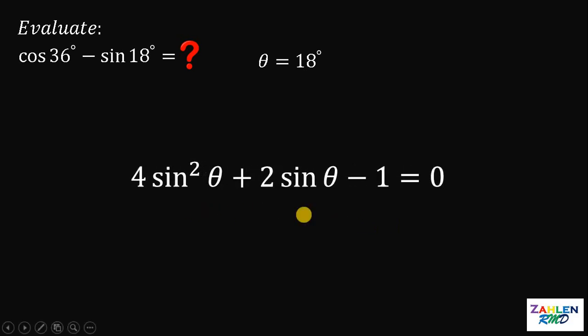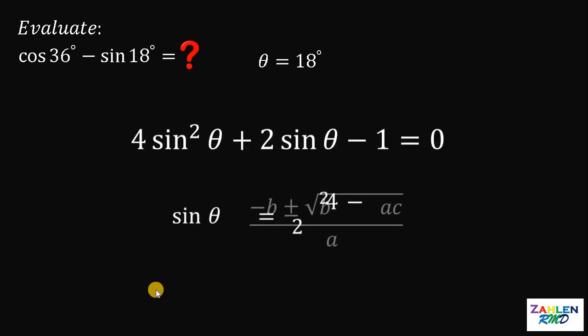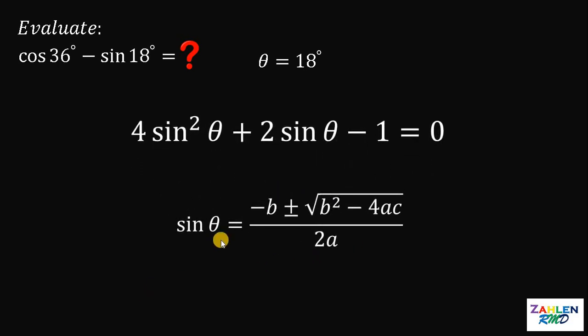Using the Pythagorean identity, cosine squared A equals 1 minus sine squared A. So cosine squared theta is replaced by 1 minus sine squared theta. Then negative sine squared theta minus 3 sine squared theta gives 4 sine squared theta. We now have a quadratic equation in terms of sine. Rearranging and equating to zero, we can use the quadratic formula to find the value of sine theta.